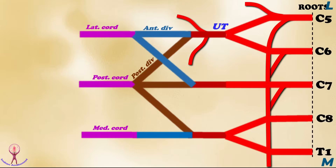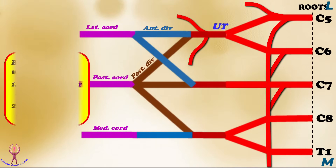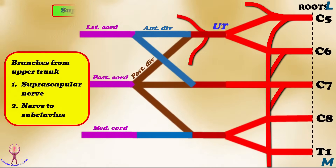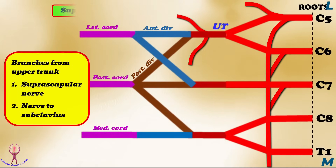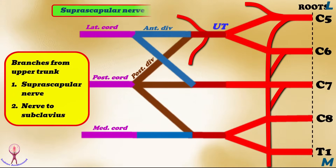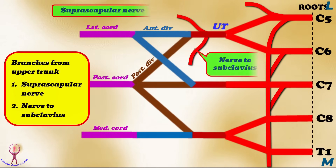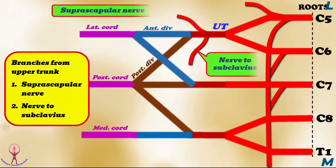Branches from the trunk: only the upper trunk gives branches. They are: first, the suprascapular nerve, which supplies the supraspinatus and infraspinatus muscles; and second, the nerve to subclavius, which supplies the subclavius muscle.